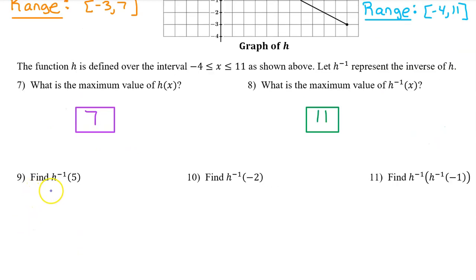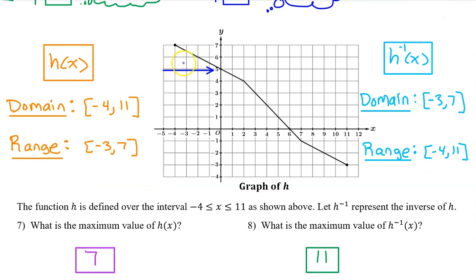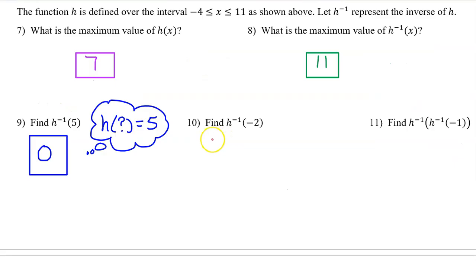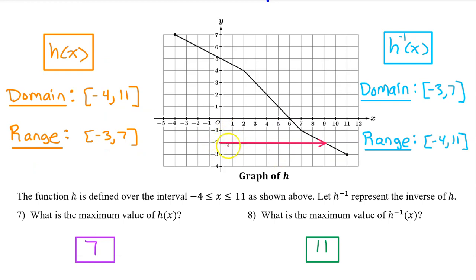Number 9: find h inverse at 5. We don't have h inverse, only h. So ask yourself, h at what will equal 5? h at 0 is equal to 5. Number 10: find h inverse at negative 2. Ask yourself, h at what is negative 2? We can see that h at 9 is negative 2.